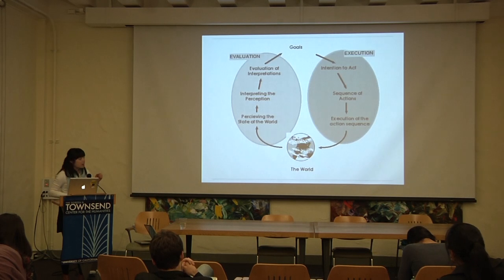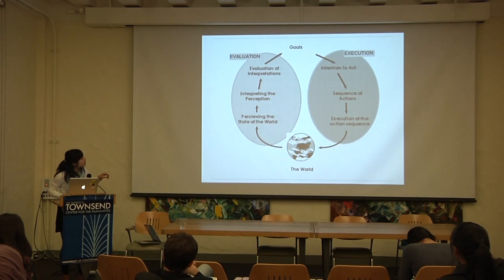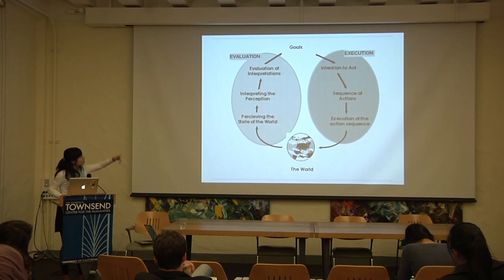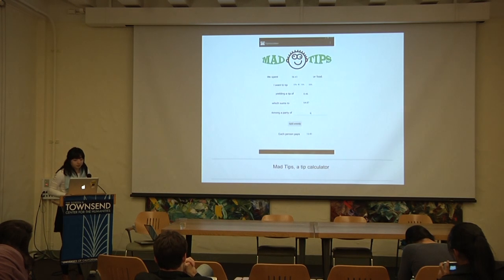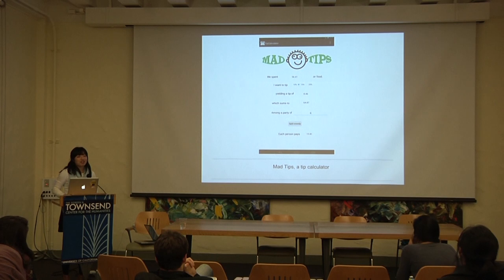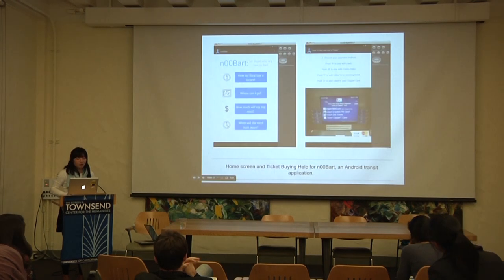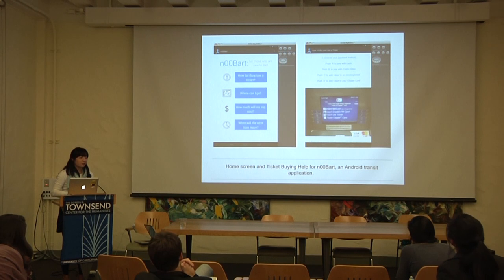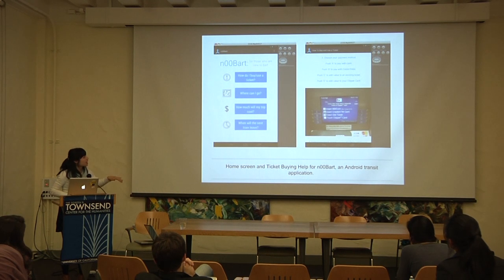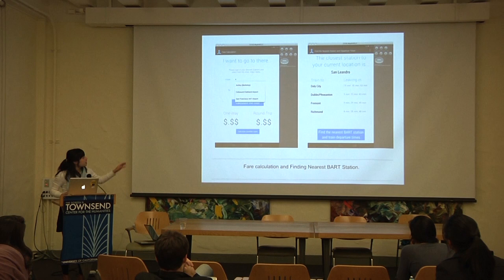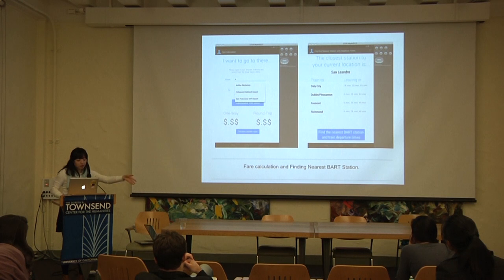These are some of the things I built in that class. I built a tip calculator called Mad Tips — a play on Mad Libs. I also built a BART application for people new to BART, called New BART. It has simple questions like: how do I buy and use a ticket? Where can I go? How much will my trip cost? And when will the next train leave? There are also screenshots showing one-way or round-trip calculation options.